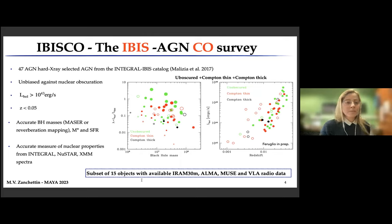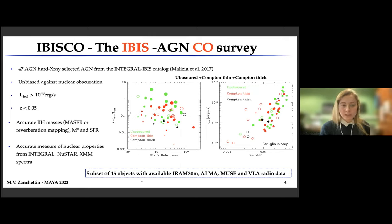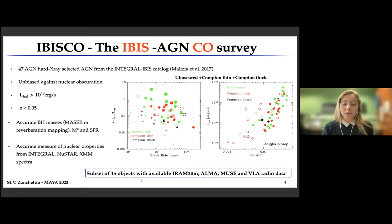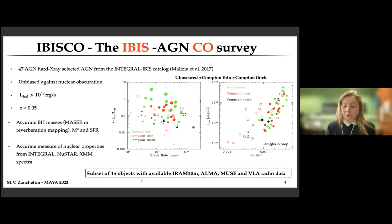This sample is made up of 47 AGN-Seyferts selected from the INTEGRAL IBIS Catalog by Malizia et al. 2017. These objects are unbiased against nuclear obscuration, have bolometric luminosities above 10^43 erg per second, and have accurate black hole masses, stellar masses, star formation rates, and accurate measures of nuclear properties. From this sample, we drew a subset of 15 objects with available IRAM 30-meter, ALMA, MUSE, and VLA radio data, in order to perform a multi-band analysis and build a complete view of these Seyfert galaxies.